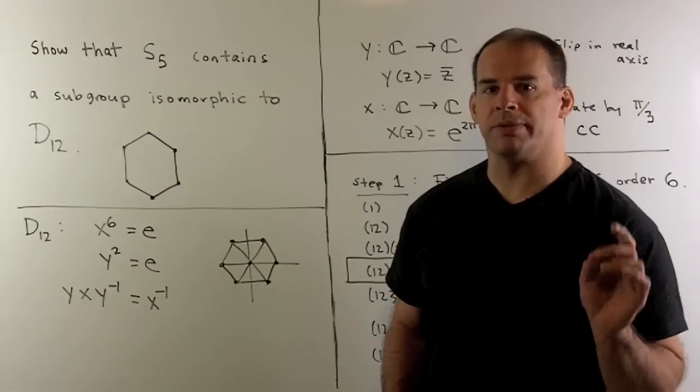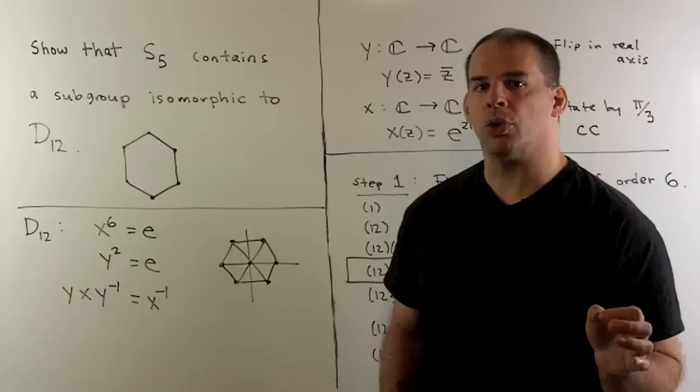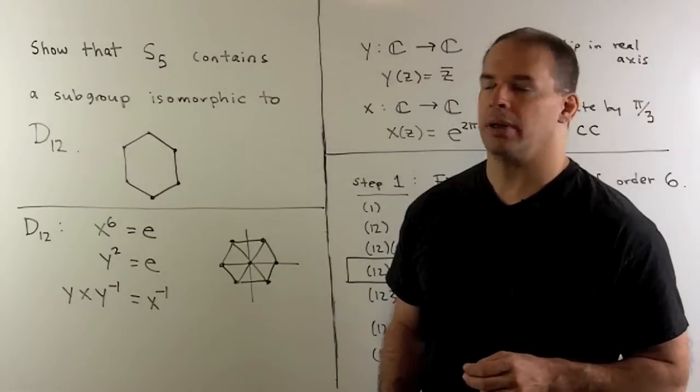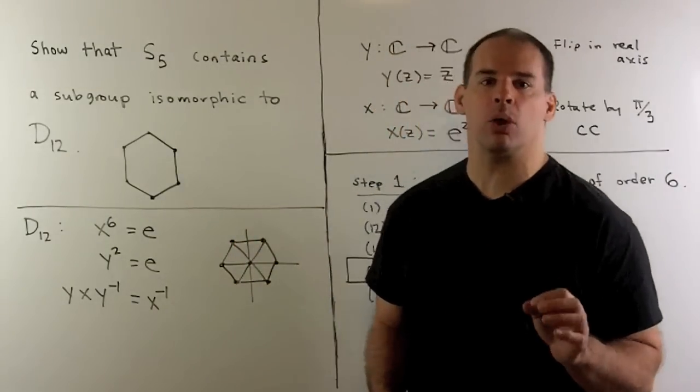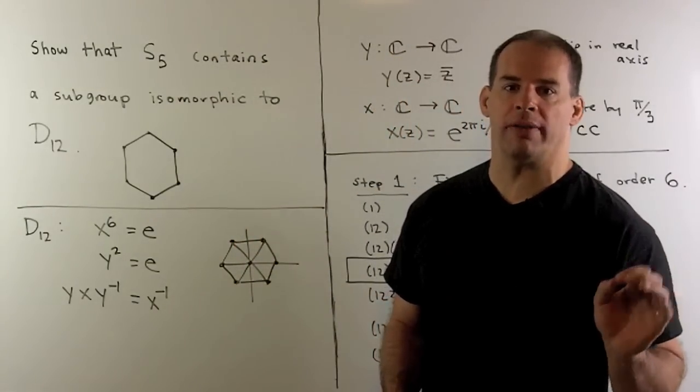Here's a problem on subgroups of S5, a symmetric group on five letters. We want to show S5 contains a subgroup isomorphic to the dihedral group with 12 elements.